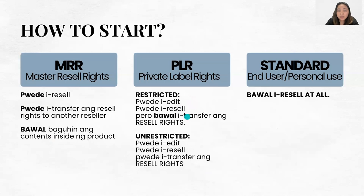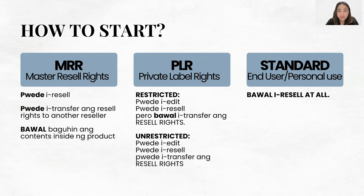PLR stands for Private Label Rights and has two kinds. Restricted PLR: you can edit it, you can resell it, but you cannot transfer the resell right — so the buyer cannot resell it further; it's for personal use only. Unrestricted PLR: you can edit it, resell it, and transfer the resell rights, so someone who buys from you can also resell it to others.